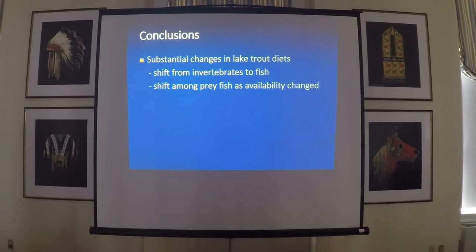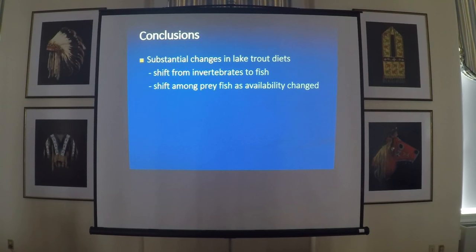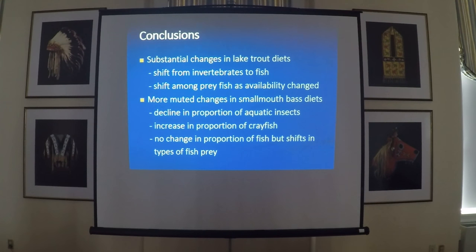In conclusion, we did see substantial changes in the diets of lake trout in response to the smallmouth bass removal, in the form of a decreasing proportion of invertebrates — both insects and zooplankton — and increasing proportion of fish. We also saw a shift in the prey fish species consumed over the course of the removal period, as the relative abundance of different prey species changed in response to the removal. The response for smallmouth bass was more muted, but we did see significant declines in aquatic insects and an increase in prey fish, and a change in the proportions of different prey fish families within the diet as their relative abundance changed over time.